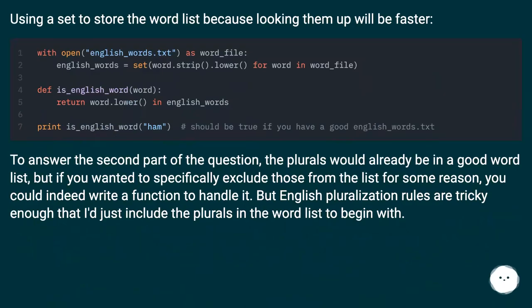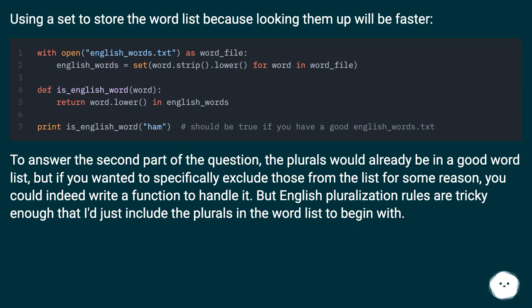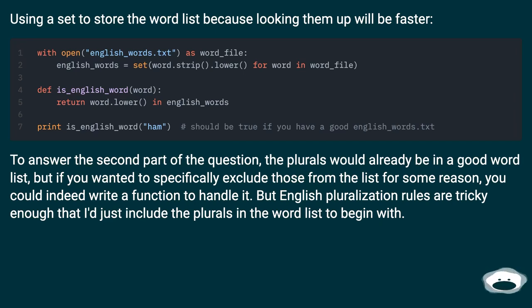Using a set to store the word list, because looking them up will be faster. To answer the second part of the question, the plurals would already be in a good word list, but if you wanted to specifically exclude those for some reason, you could write a function to handle it. But English pluralization rules are tricky enough that I'd just include the plurals in the word list to begin with.